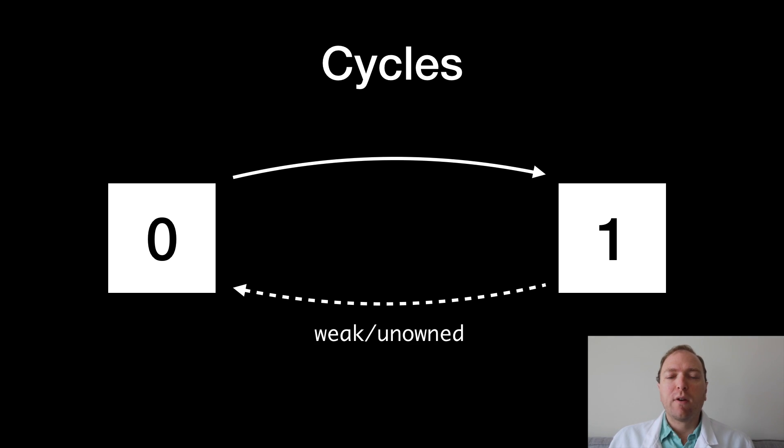The standard fix to this is to make one of the references either weak or unowned. That allows the reference count of one of the objects to drop to zero, which means it can be destroyed and then the other references go away, and the entire cycle gets destroyed.